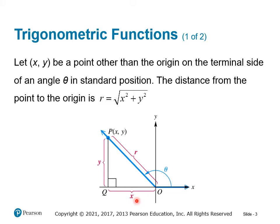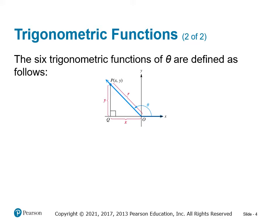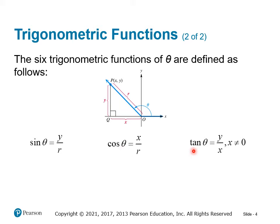We're going to use these measures x, y, and r. Because this point is (x, y), it means it's x units away from the origin horizontally and y units tall. Using those measures of x, y, and r, we can define the six trigonometric functions of theta. The first is sine: sine of theta equals y over r. The cosine of theta equals x over r. And the tangent of theta — these are all abbreviations you'll see on your calculator — equals y over x.